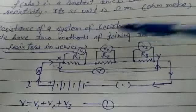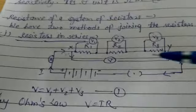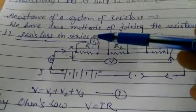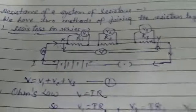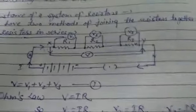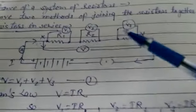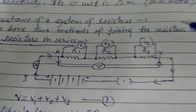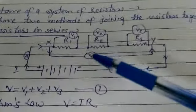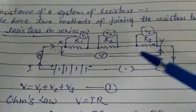Resistance of a system of resistors. So this is a derivation of resistors in series where I have told you that when we put the resistors in series combination there are three resistors.